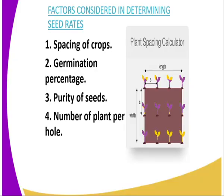On to the factors considered in determining seed rate. The first one is spacing of crops. If the crop spacing is close, the closer the spacing of the crop, it means that you will use a high rate of seed rate, or more seeds will be used to cover a given portion of land.